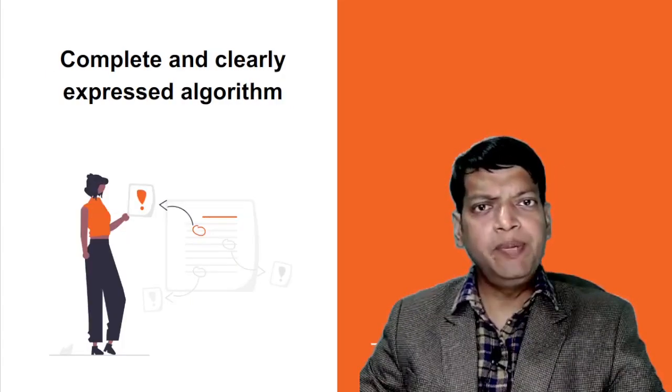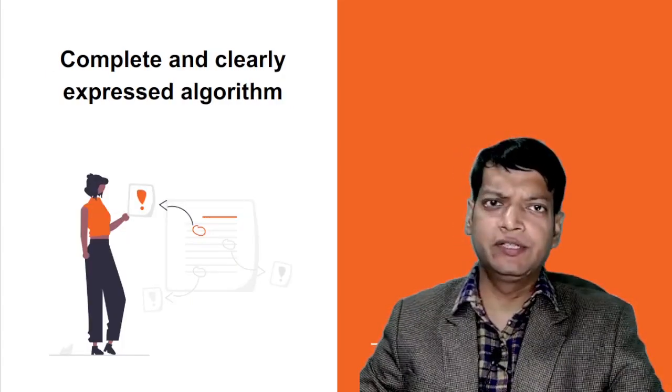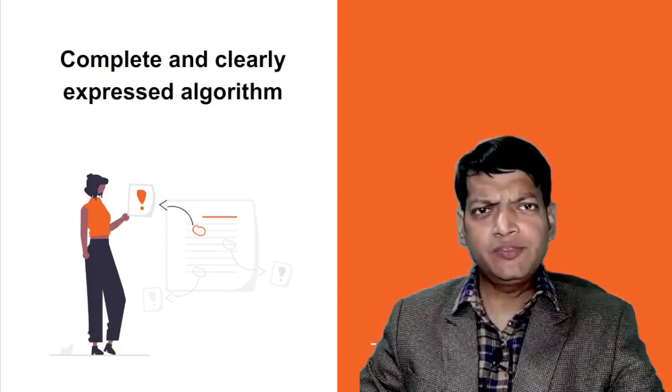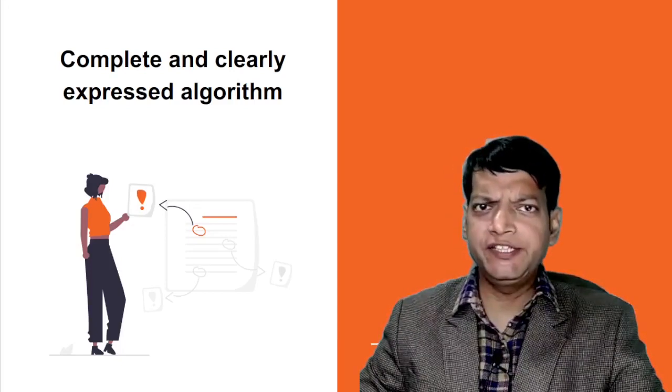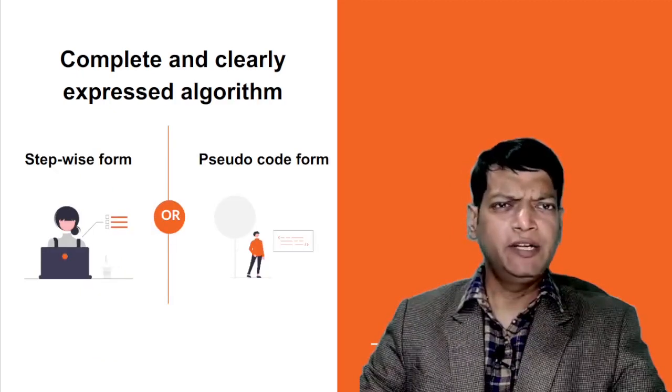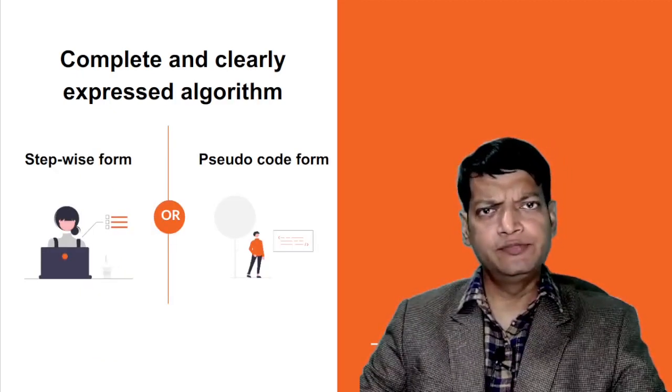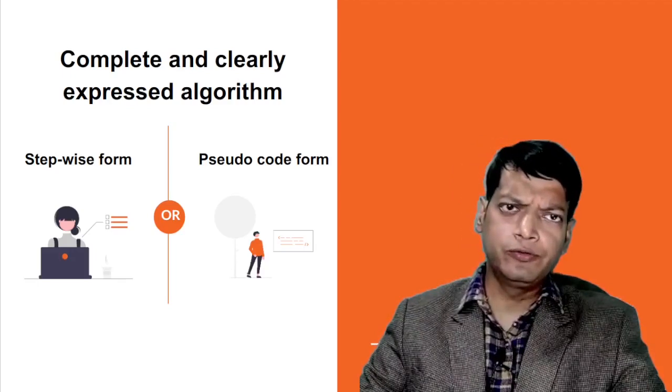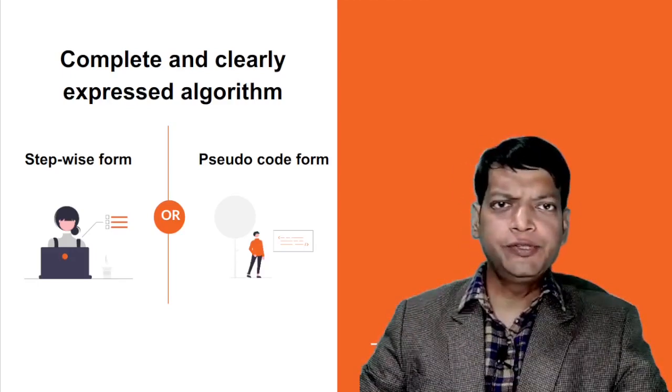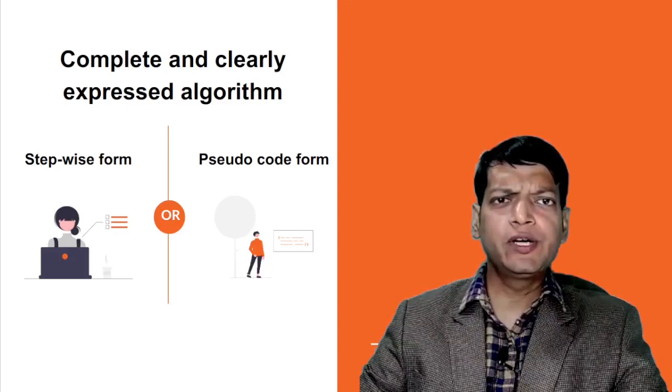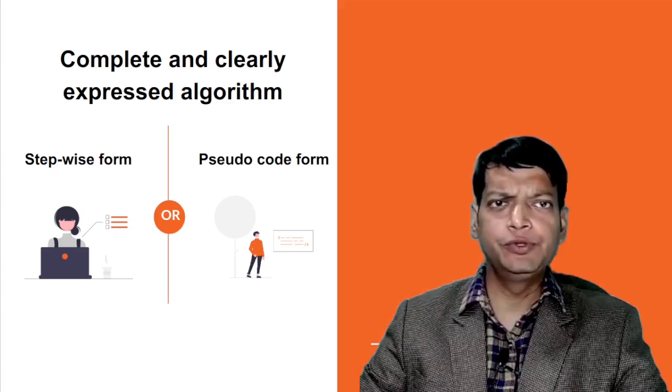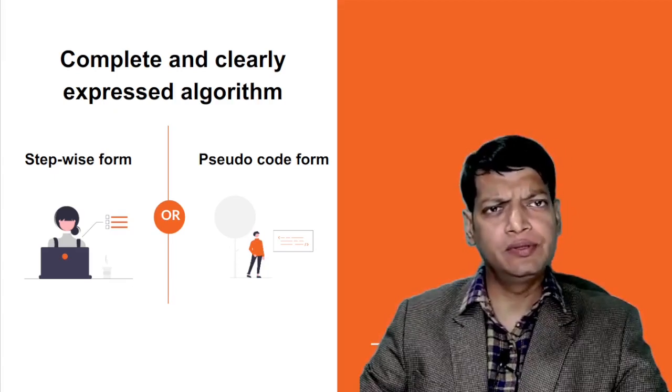The second thing is complete and clearly expressed algorithm. The complete part is rather self-explanatory, but clearly expressed algorithm needs a bit of explanation. The algorithm can be expressed in two forms: stepwise form or pseudocode form. Stepwise notation refers to expressing the algorithm in plain simple English and stepwise form like step one do this, step two do this, step three do this and so on.